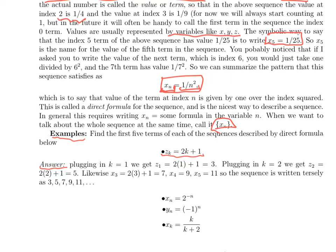So I want you to be able to do two things. One is if I write a direct formula for a sequence like z_k = 2k + 1, I want you to be able to find the first few terms. That's pretty straightforward. When we plug in k = 1, we get z sub 1 = 3. When we plug in k = 2, we get z sub 2 is 2 times 2 plus 1. Z sub 3 is 2 times 3 plus 1 or 7. Z sub 4 is 9. Z sub 5 is 11.